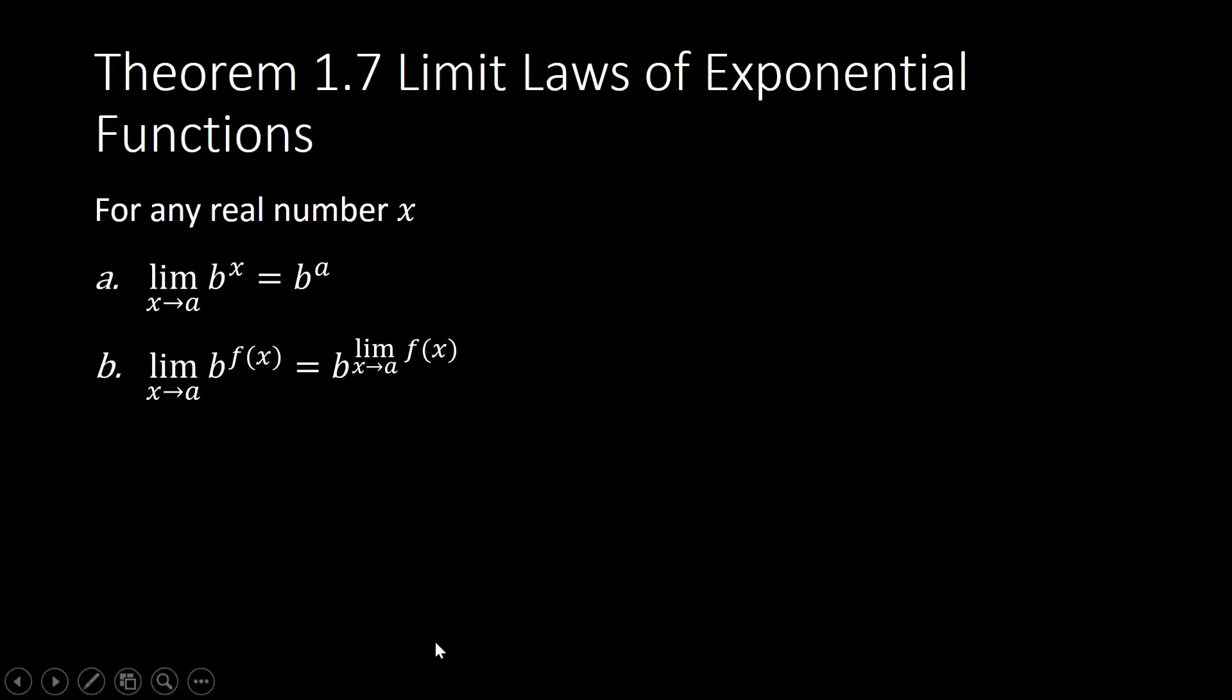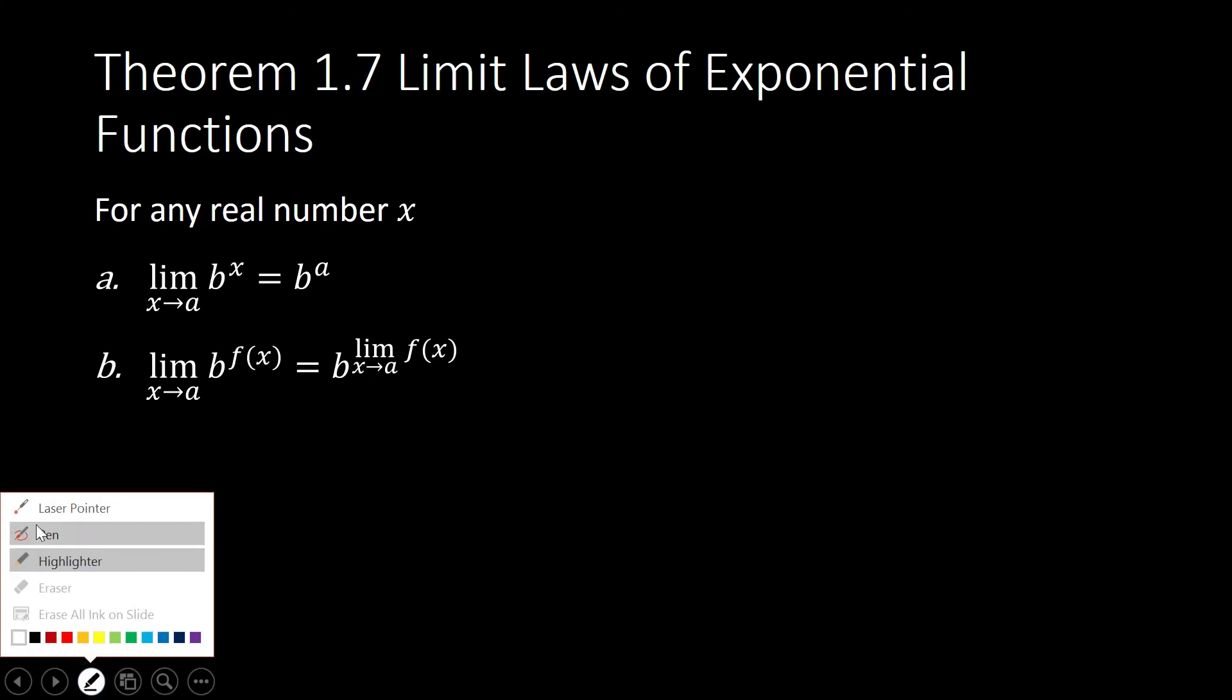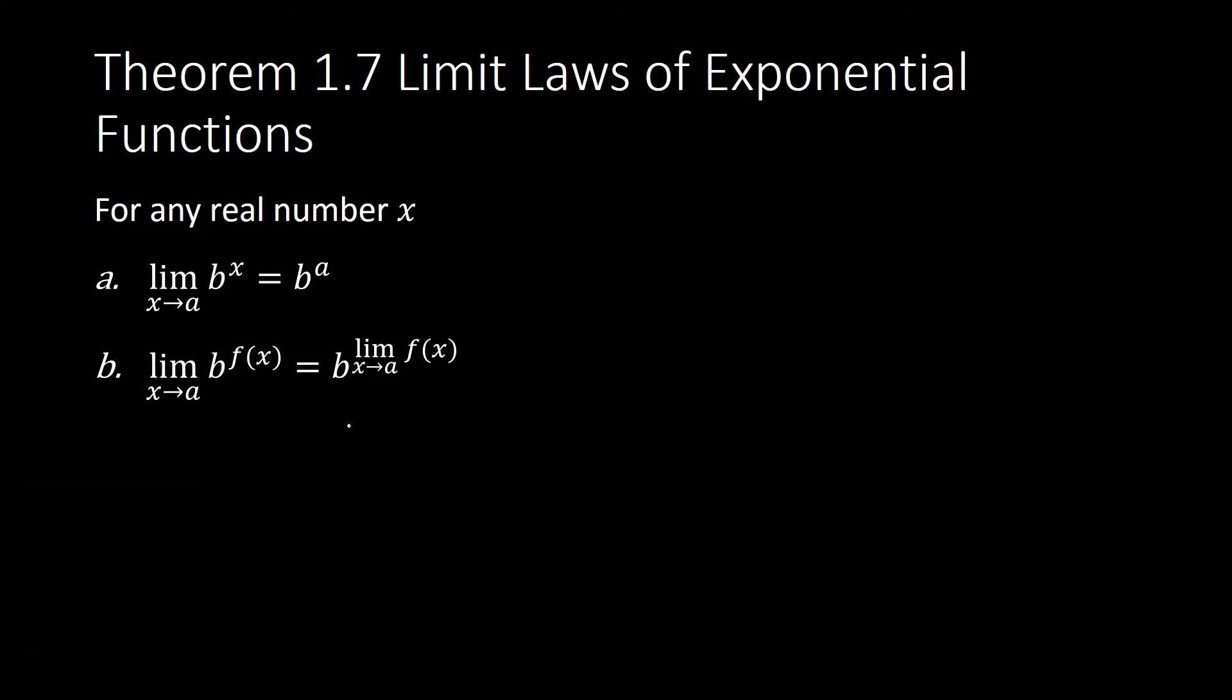Theorem 1.7. Limit Laws of Exponential Functions. For any real number x, the limit of b raised to x as x approaches a is b raised to a. The limit of b raised to f of x as x approaches a is equal to b raised to the limit of f of x as x approaches a.